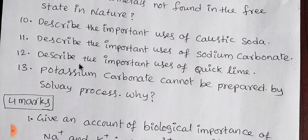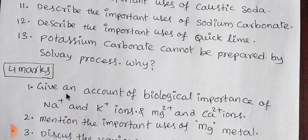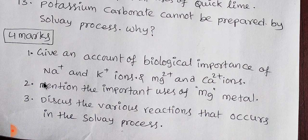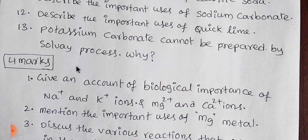Next, important uses of caustic soda and sodium carbonate and quick lime — Solvay process. Potassium carbonate cannot be prepared by the Solvay process. For 4 marks, we have 3 questions: give an account of the biological importance of Na⁺ and K⁺ ions, and Mg²⁺ and Ca²⁺. 2nd one: mention important uses of magnesium metal. 3rd one: discuss the various reactions that occur in the Solvay process. Maximum 2 marks and 4 marks are added.